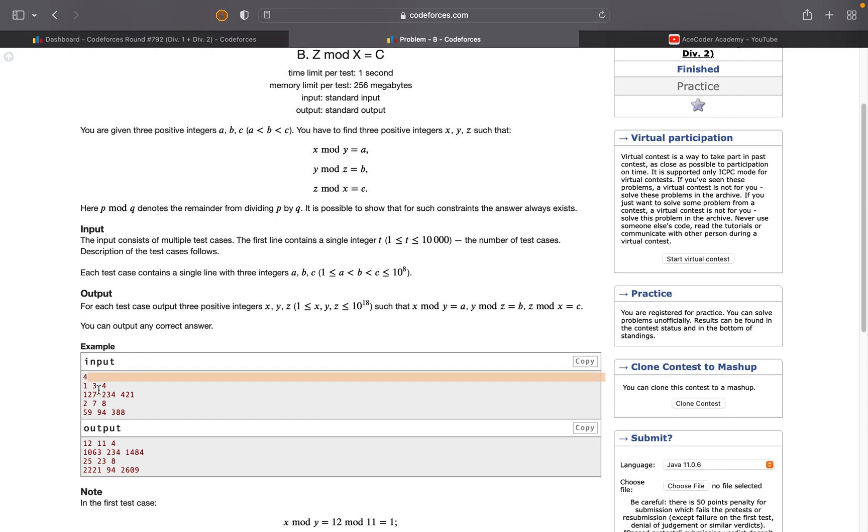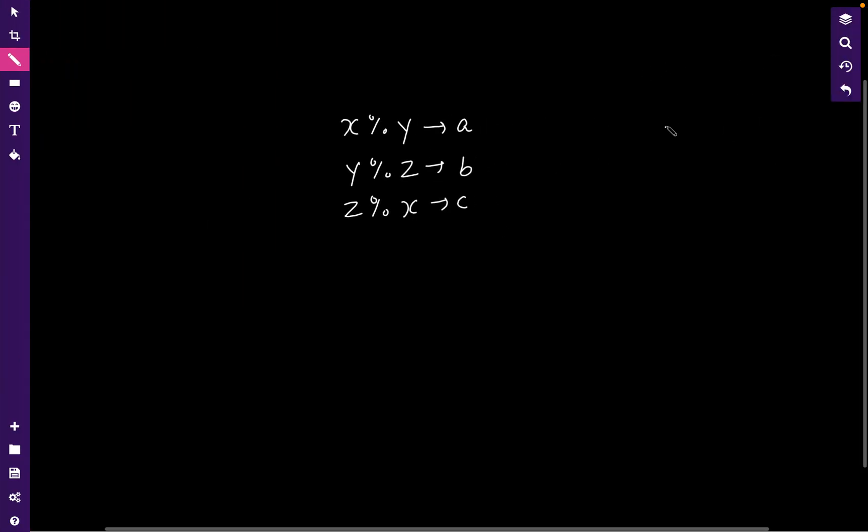The first example that we are given is 1, 3, and 4. So let's write it in the similar fashion: 1, 3, and 4, and this is how we are writing it in the same manner like this.